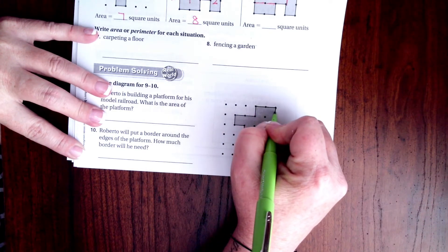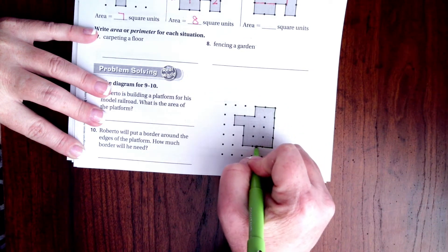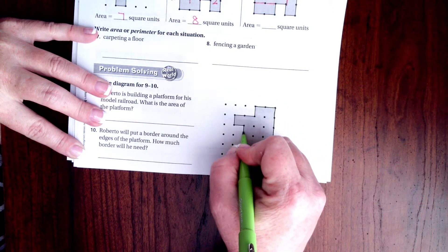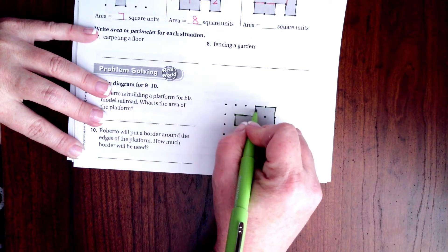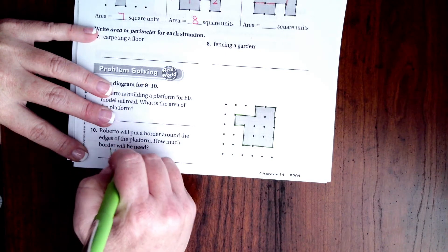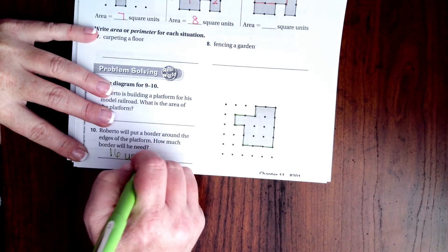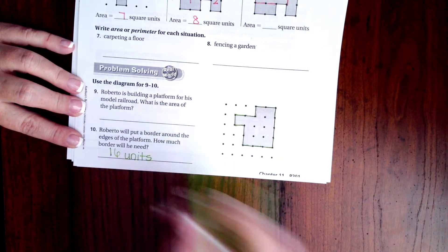So let's see. 1, 2, 3, 4, 5, 6, 7, 8, 9, 10, 11, 12, 13, 14, 15, 16. 16 units. Now, you guys cut it up and tell me what the area is right there.